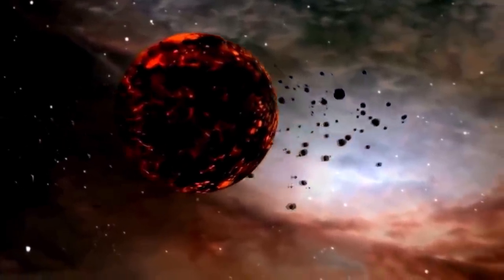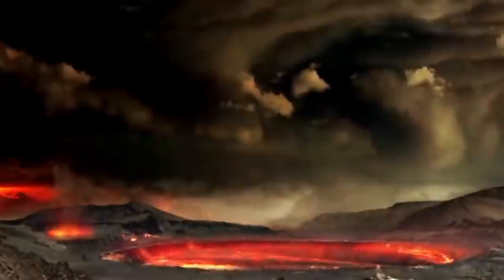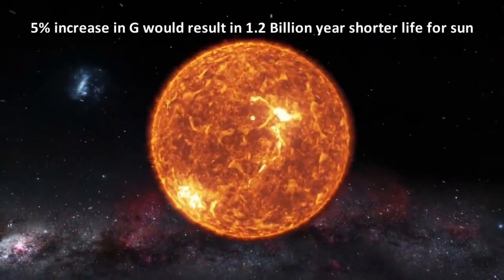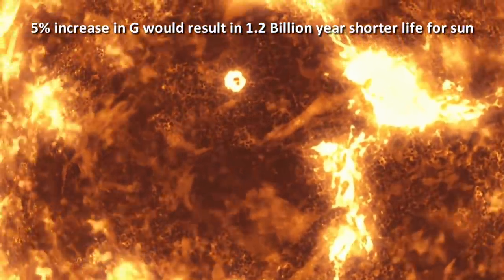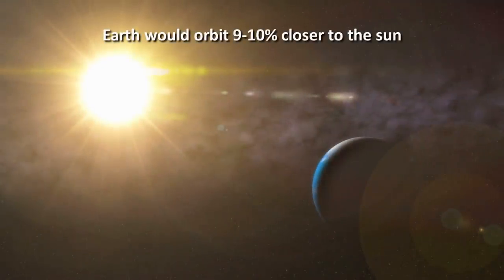And if the stars powering the solar system can't survive for that long, then its orbiting planets likely could not contain life. It is therefore very important to have the right strength of gravity. Just a 5% increase in the gravitational constant would result in at least a 1.2 billion year decrease in the lifespan of the sun. More importantly, the earth would orbit around 9 to 10% closer to the sun. This would lead to huge climate changes, and this in turn could probably mean the end of the human species.